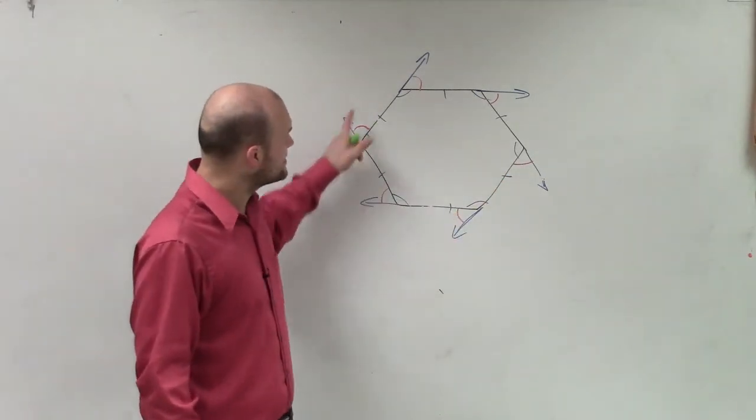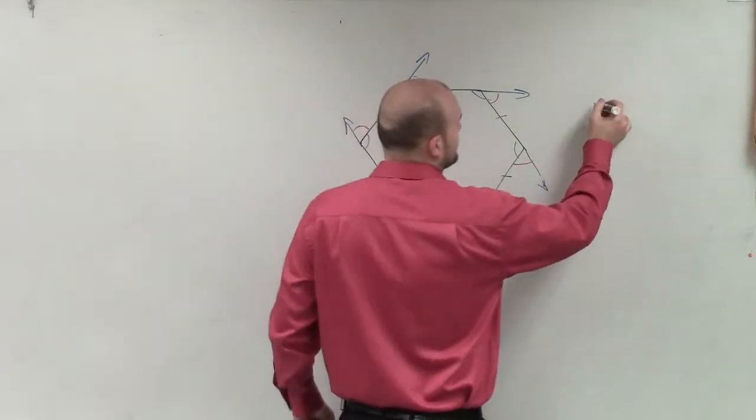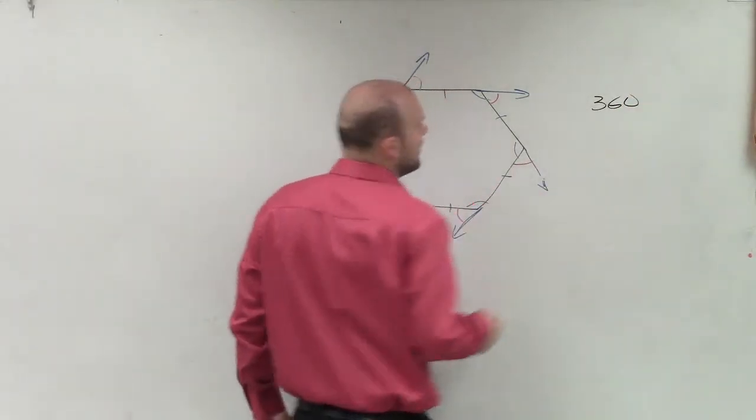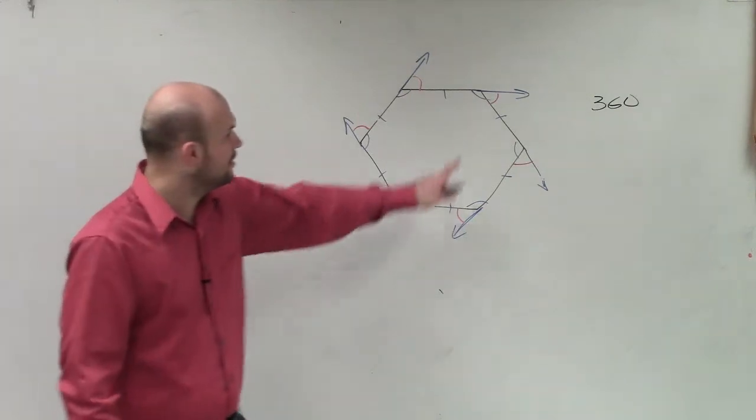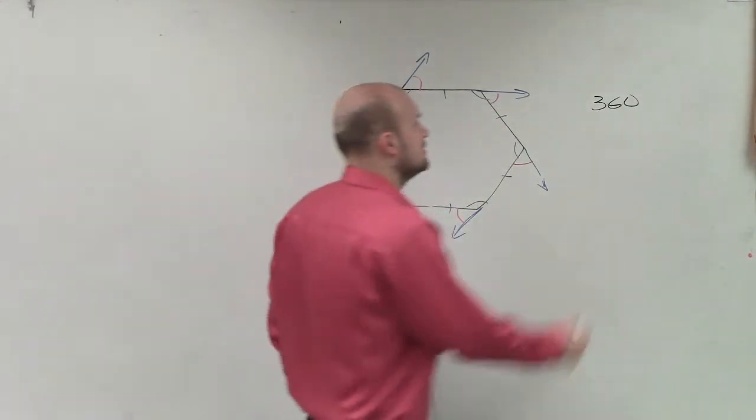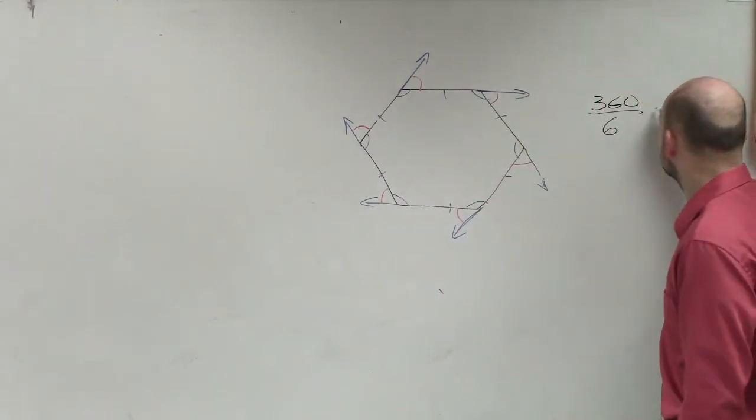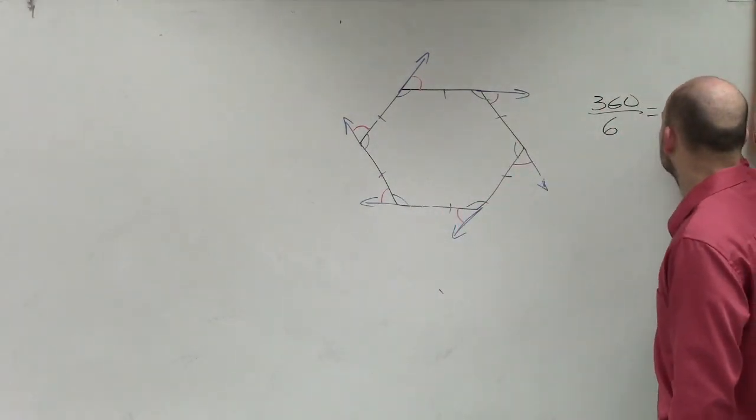So when you guys look at this, all we need to do is really count and say, alright, well, we have 360 degrees. Well, how many are we dividing that sum by? 1, 2, 3, 4, 5, 6. So I say 360 divided by 6 equals 60 degrees.